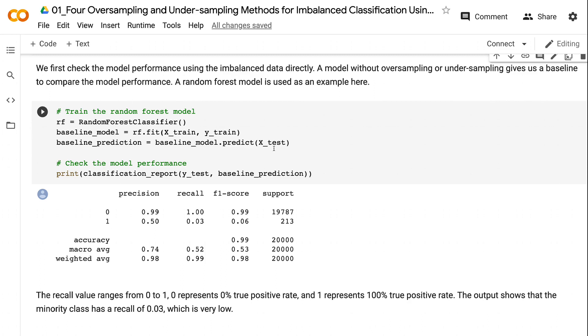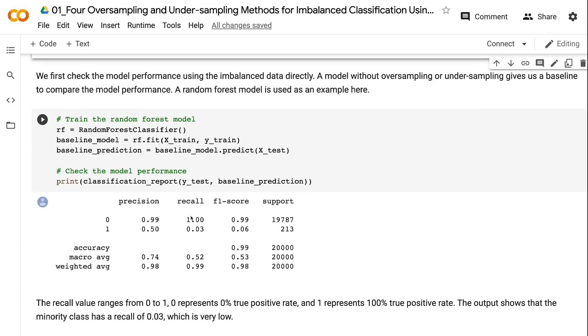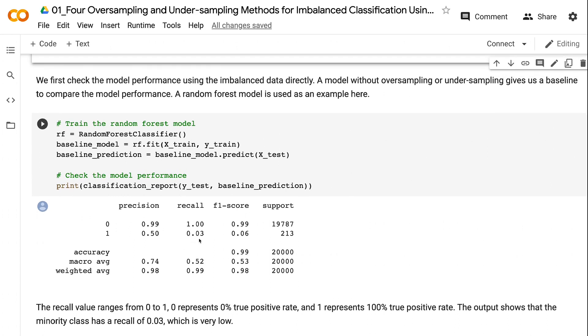After training the model using the training dataset and making predictions on the testing dataset, we got the model performance results. The recall value ranges from 0 to 1, 0 represents 0% true positive rate, and 1 represents 100% true positive rate. The output shows that the minority class has a recall of 0.03, which means around 3% of the minority class is captured by the model.